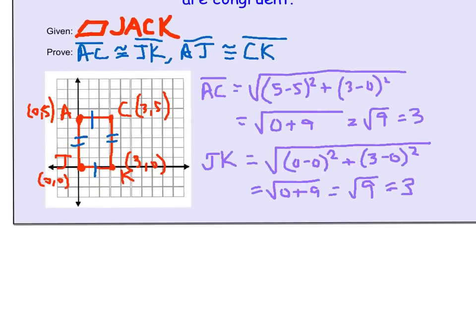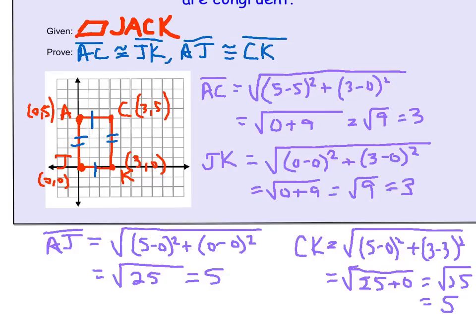Now I'll do the same work to show that AJ and CK are congruent. After doing the distance formula for AJ and CK, we see that they both equal 5 units.